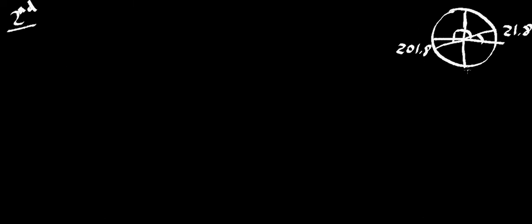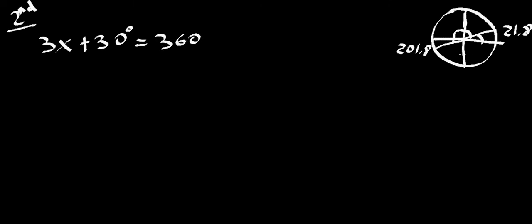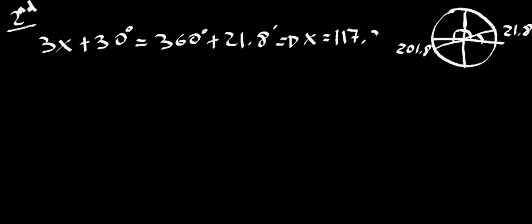I've put my unit circle here with the two angles: 21.8 and 201.8, which is 180 plus 21.8. We're going to go around the circle — remember, we have 3x inside our tan, so we need to go around three times. For the second turn, 3x plus 30 equals 360 plus 21.8 degrees. Adding, subtracting 30, and dividing by 3, we get x equals 117.26 degrees. We also have 3x plus 30 equal to 360 plus 180 plus 21.8. Working those out — add them up, subtract 30, divide by 3 — x is also equal to 177.26 degrees.